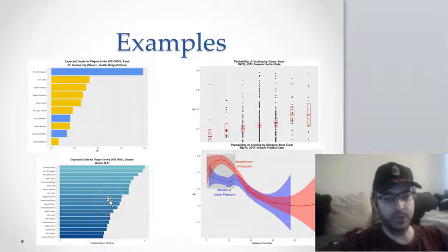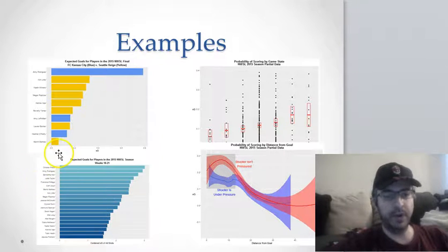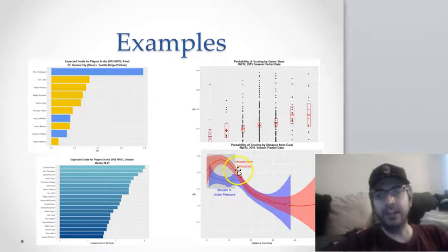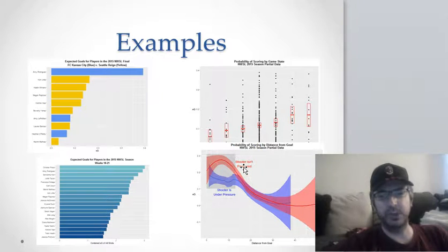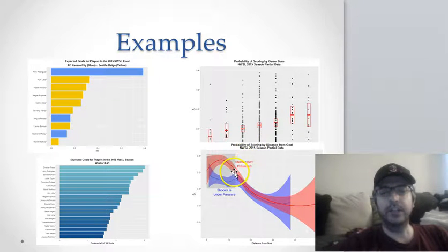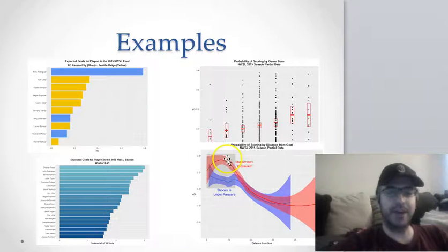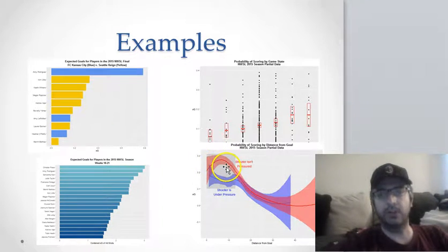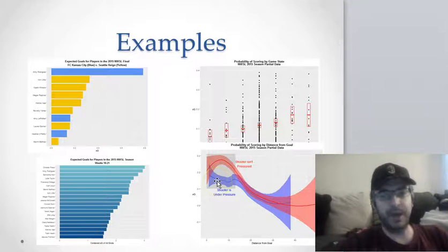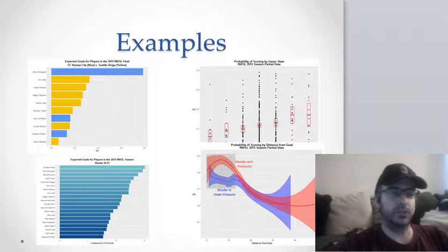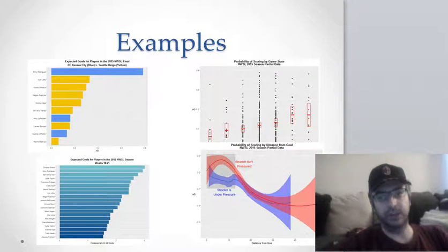Here at the bottom I did sort of an overall expected goals model for weeks 18 through 21 - Kristen Press and Amy Rodriguez leading the pack. And here was one of my most popular tweets of all time: likelihood of scoring whether shooters are under pressure or not. It turns out pressure matters a lot for the first 10-12 yards, sort of the penalty spot in, but outside that it doesn't matter for expected goals too much.